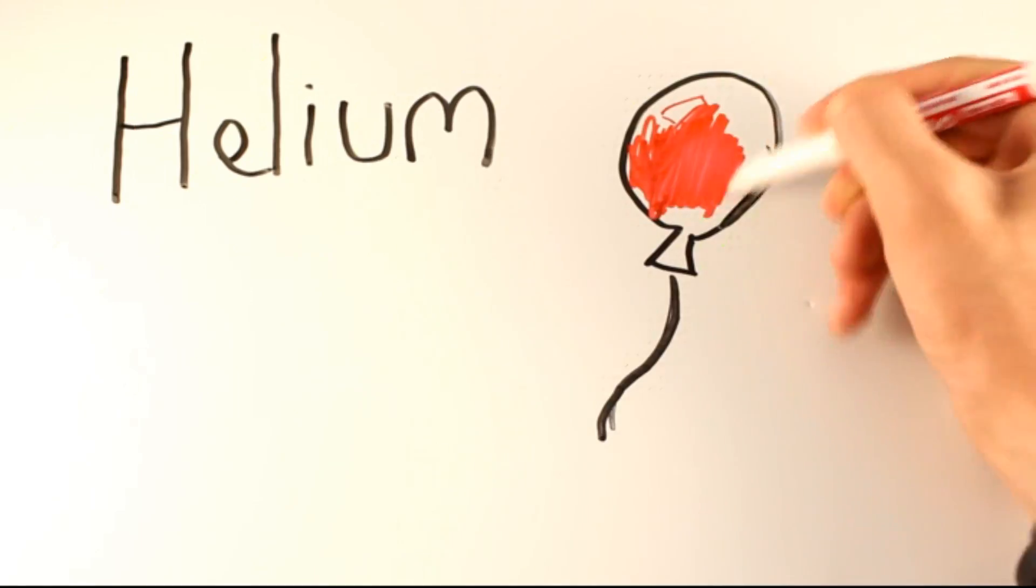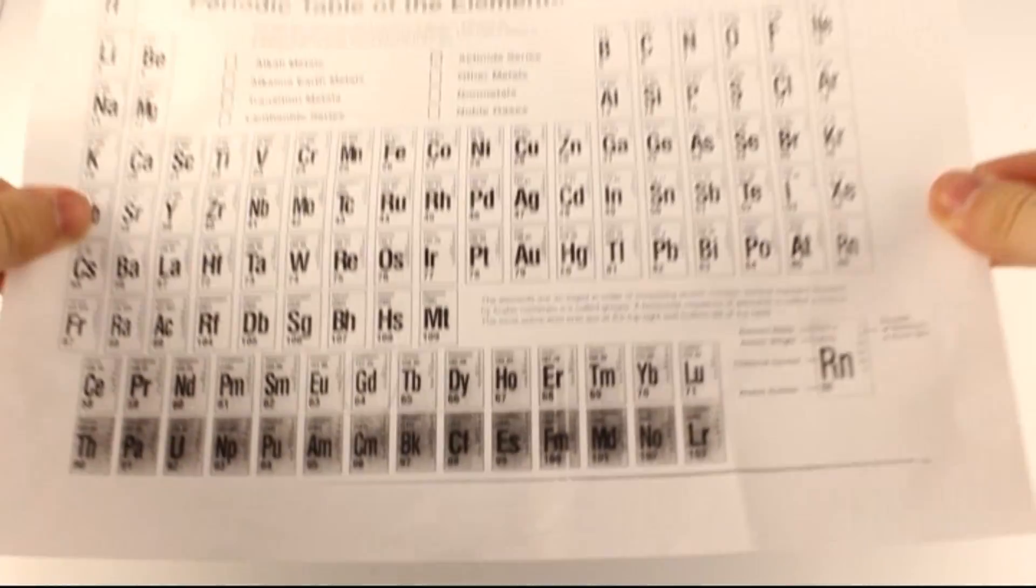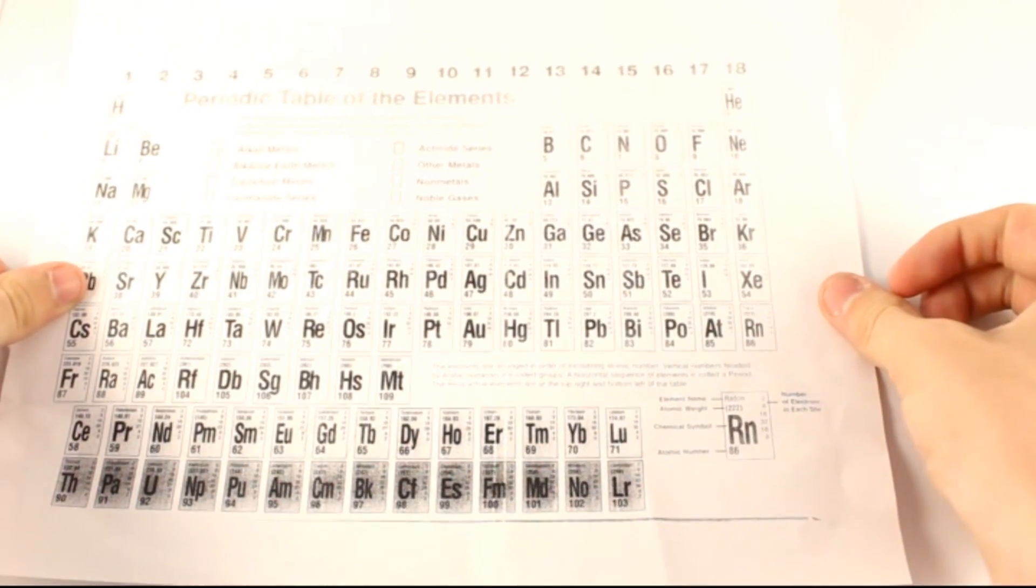There are different types of atoms, like oxygen, aluminum, gold, helium. These are called elements, and they are organized into the periodic table.